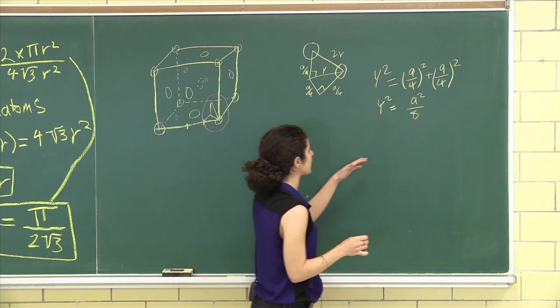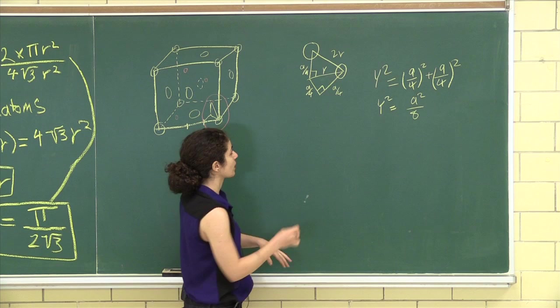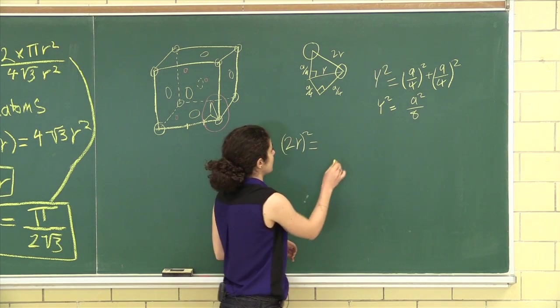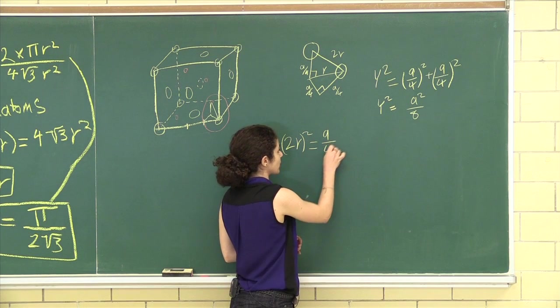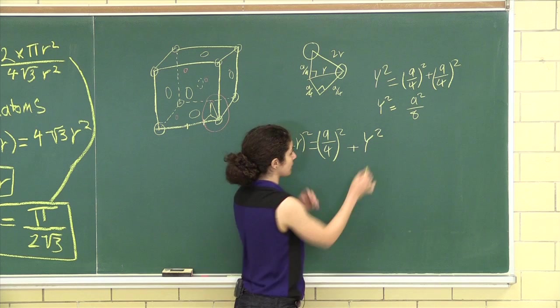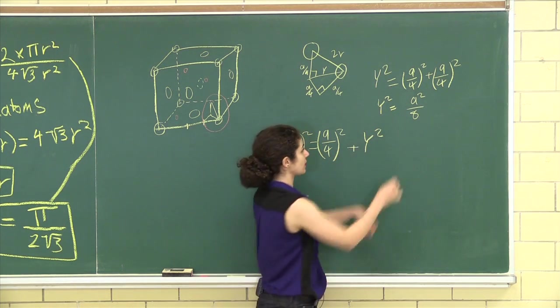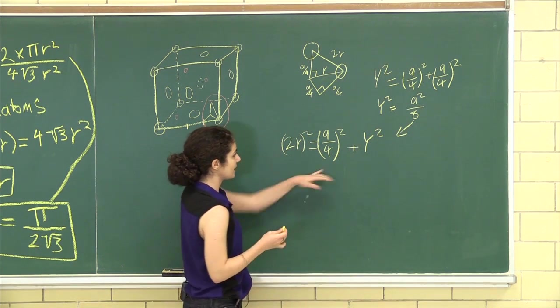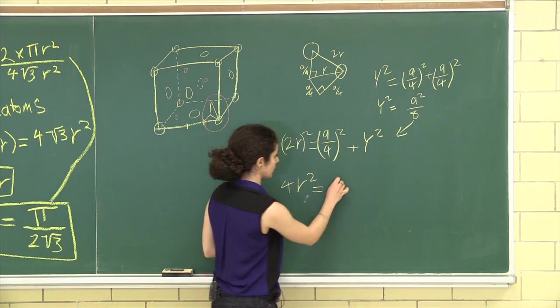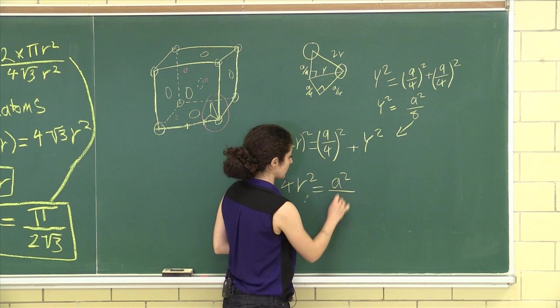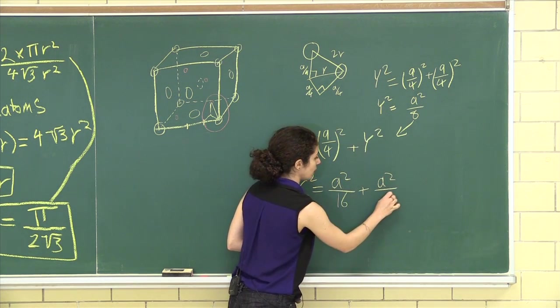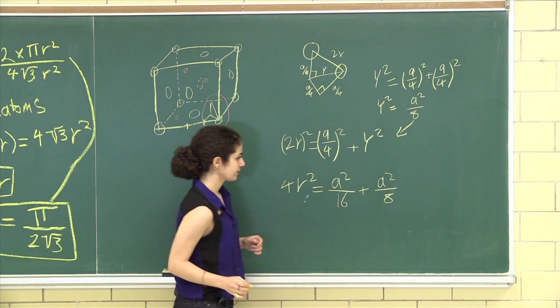That is our y squared. Now the second triangle, we have 2r squared is equal to a over 4 squared plus y squared. We have y squared from up here. So let's do that, put that in. And let's solve for the other guys. So 4r squared is equal to a squared over 16 plus a squared all over 8. Perfect.